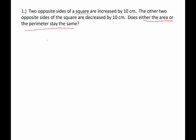So area for a square — we could say length times width, but since the length and width of a square are the same, we can just say side squared. And for a rectangle, which we'll also need, it's length times width, or base times height.